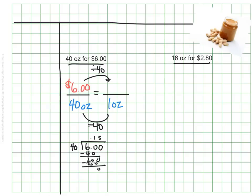From my calculations, I see that it will cost $0.15 to buy one ounce of the peanut butter. And that means that if I buy 40 ounces, each one of those ounces is a rate of $0.15. It costs $0.15 for each.